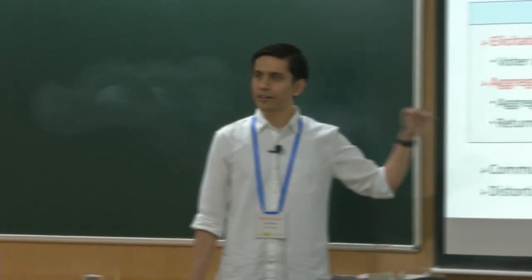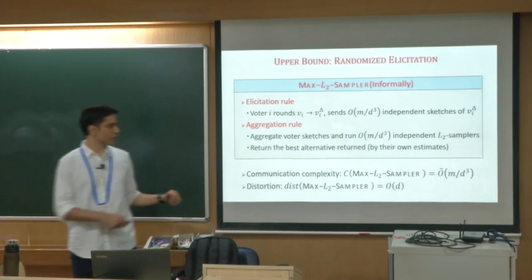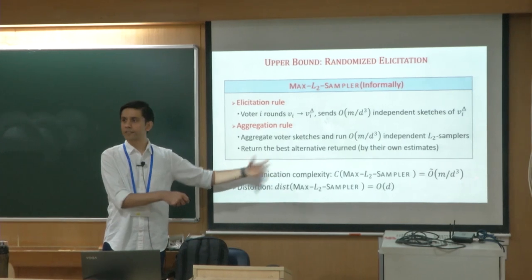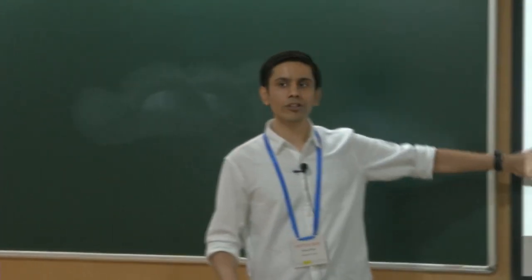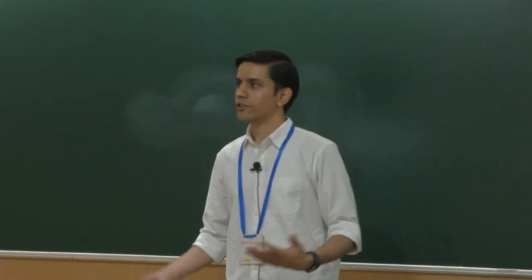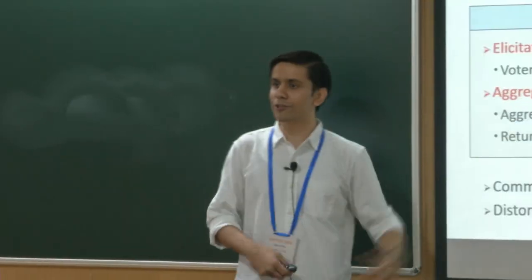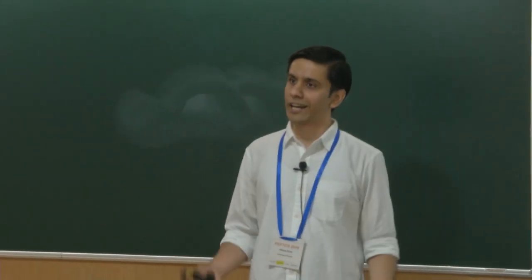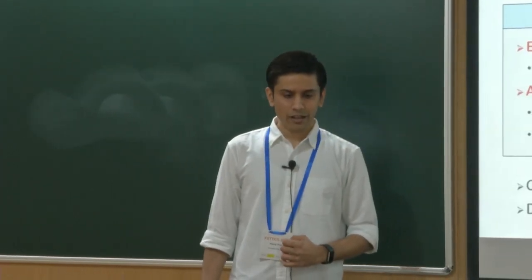To summarize the upper bounds: with deterministic elicitation you can get distortion d with O(m/d) communication complexity; with randomized elicitation you can get the same distortion with only O(m/d³) bits. Both can be achieved with deterministic aggregation rules. But we also show matching lower bounds that hold even for randomized aggregation, meaning once you fix whether elicitation is deterministic or randomized, the choice of aggregation type doesn't change things.